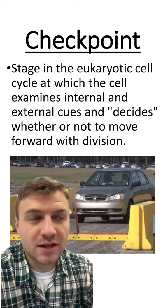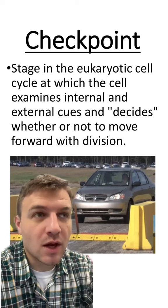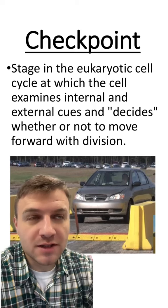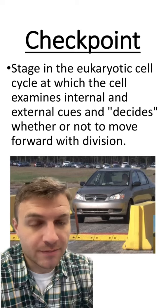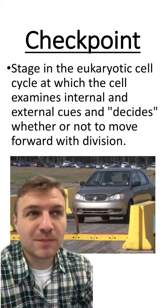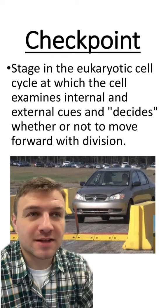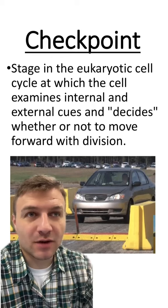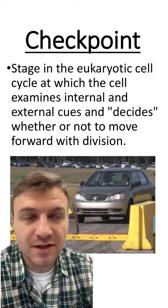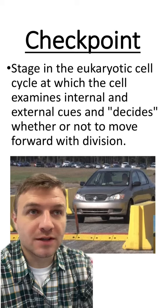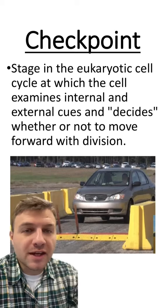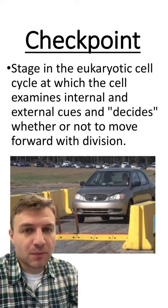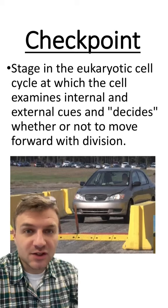During certain points of the cell cycle, there will be checkpoints to make sure everything is going okay. There will be proteins that will decide if the cell can continue in the cell cycle or be stopped. Now, there are three main checkpoints within the cell cycle.